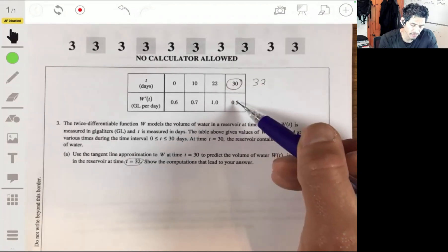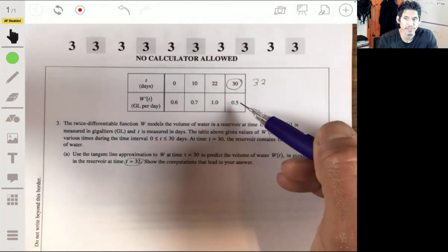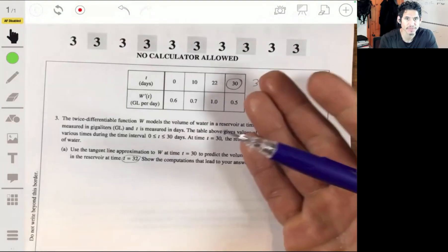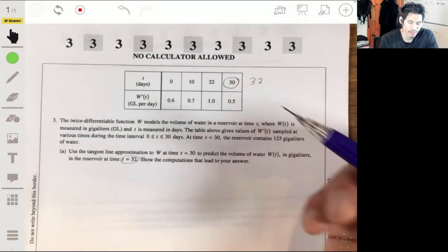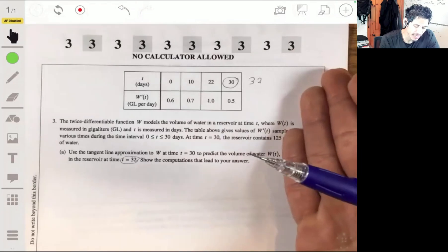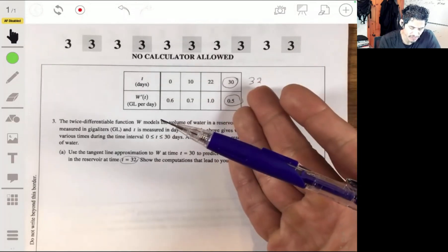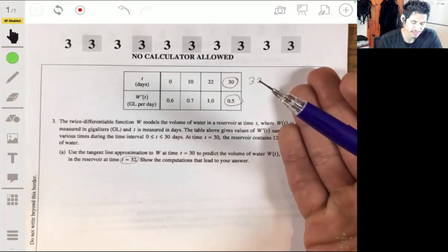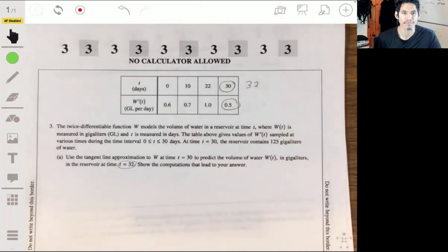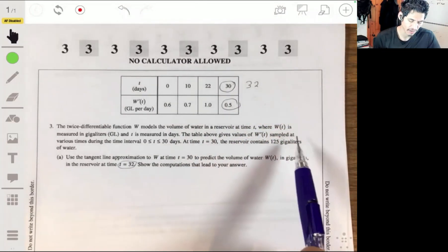So if on day 30, 0.5 gigaliters are coming in per day, we just have to use this, because that's the last piece of information we have. So for the next two days, we just keep this the same. So we would have 0.5 liters on day 31, and 0.5 liters on day 32.